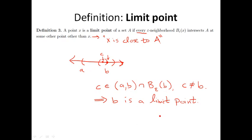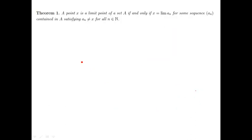A more natural way of thinking about limit points is given by the name 'limit.' Limit points are precisely the things which are realizable as limits of sequences of elements of the set A. We'll prove that in the following theorem: a point x is a limit point of a set A if and only if x is the limit of some sequence A_n contained in A, where A_n is never equal to x itself. Let's write down a quick proof of this theorem.